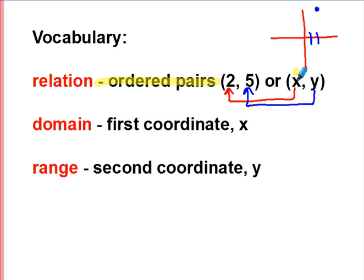You need to know that the first number in an ordered pair is the x value, and the second number is the y value. The domain is another word for the x values. So in this ordered pair, 2 is the domain. And then of course, y or 5 would be the range. Pause the movie now and copy these vocabulary words into your notes.